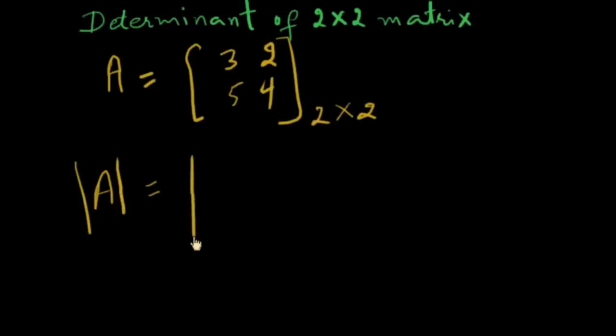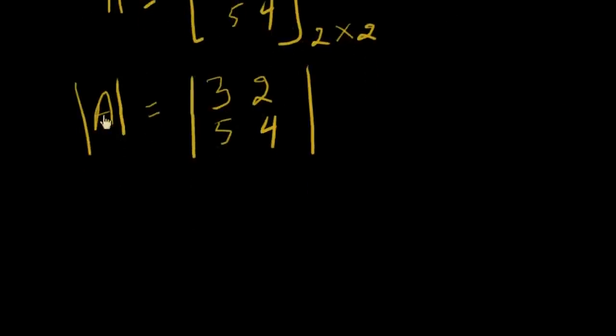Now you multiply, cross multiply 2 elements. 3 multiply with 4, 3 multiply with 4, and 2 multiply with 5. This is cross multiplication, 2 multiply with 5.